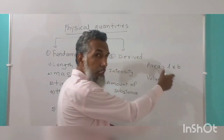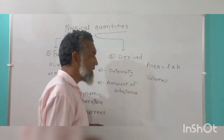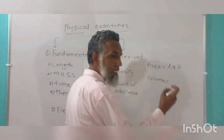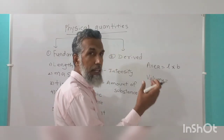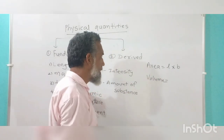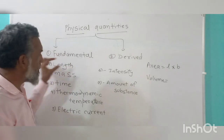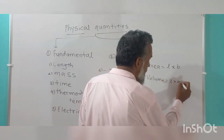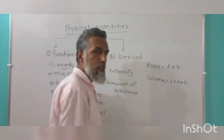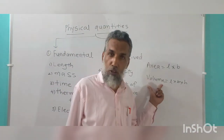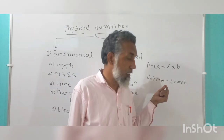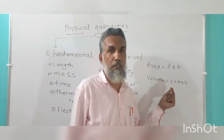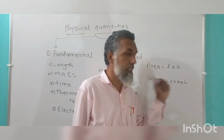Breadth is also a length — it is the same fundamental quantity. Distance, displacement, length, breadth, and height all come under the same fundamental quantity: length. So volume is length into breadth into height. Volume is also a derived quantity because it is derived from the fundamental quantity length, used three times.